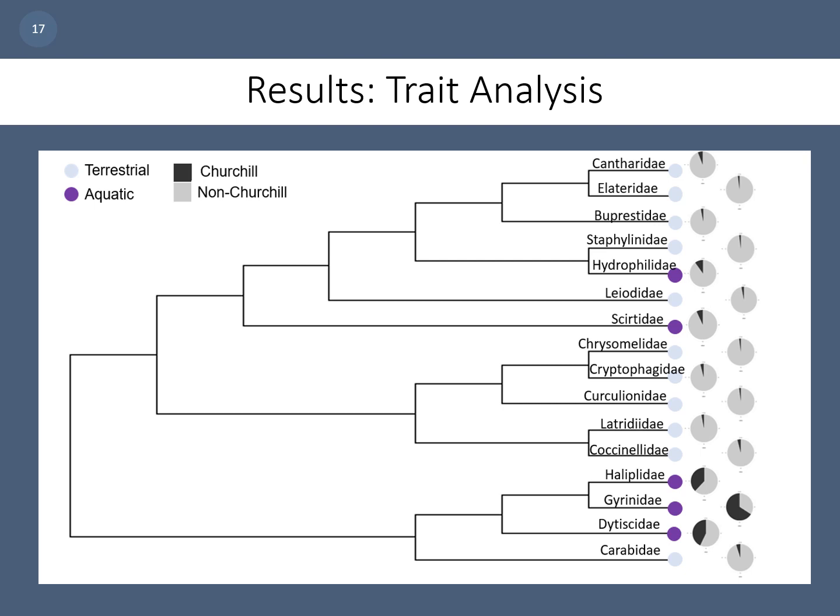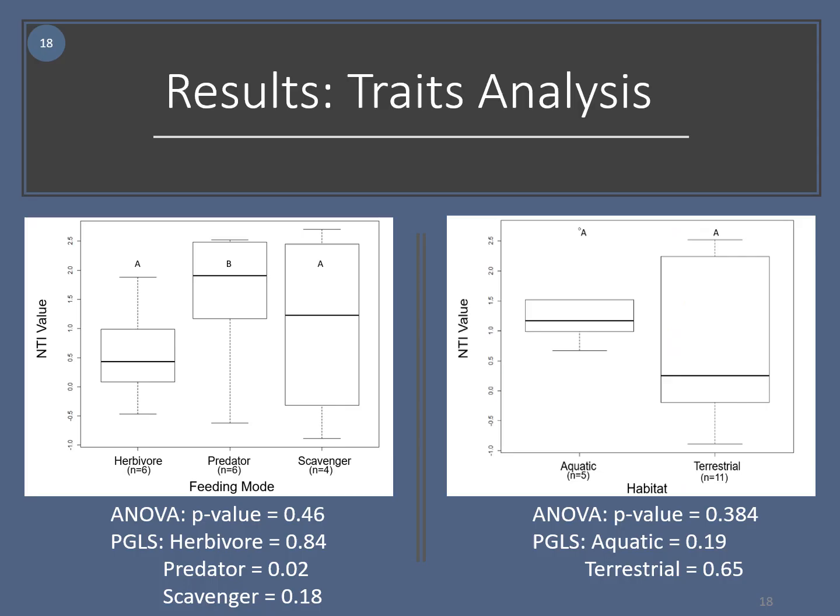An interesting finding was that a greater percentage of the total species in Canada and Alaska were found in Churchill for aquatic families than terrestrial. A chi-square test showed that habitat and phylogenetic community structure were not independent, with a higher number of aquatic individuals than expected. Similarly, feeding mode and phylogenetic community structure were also not independent. For the ANOVA, there was no significant relationship found between the traits and community structure. For the PGLS, however, predators were shown to be significantly more clustered than other feeding modes, likely due to their overwintering abilities. While there was no significant relationship between habitat and community structure, there was a trend toward increased clustering in aquatic families, likely due to environmental filtering in aquatic habitats.